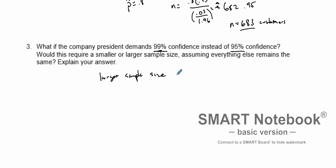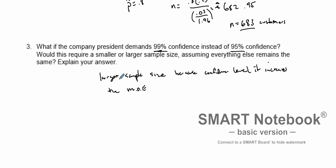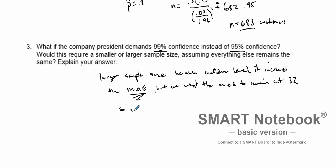We need a larger sample size because when you increase the confidence level, it increases the margin of error. But we want to keep the margin of error small — at three percent — so we need to increase our sample size to compensate for that increase in the margin of error.